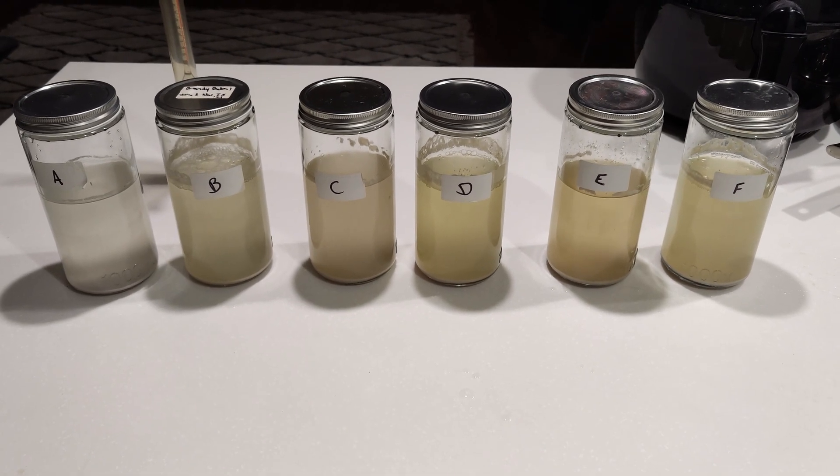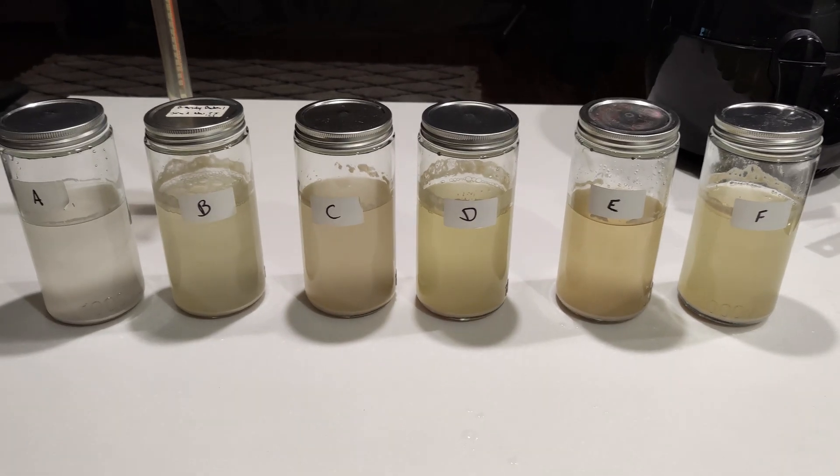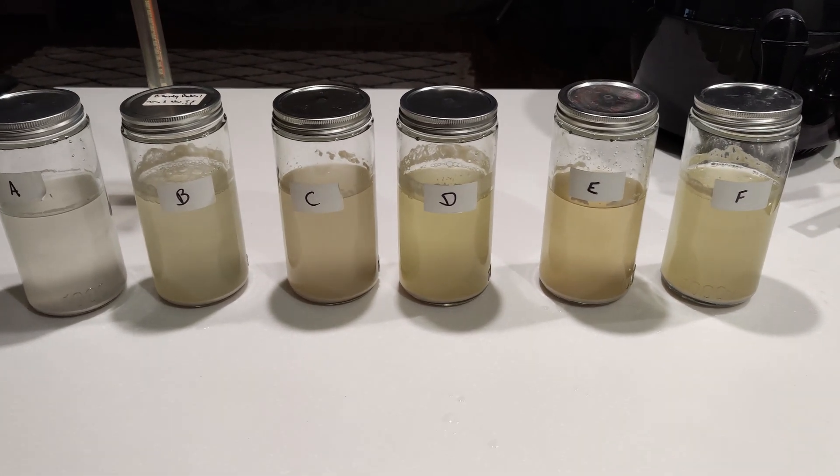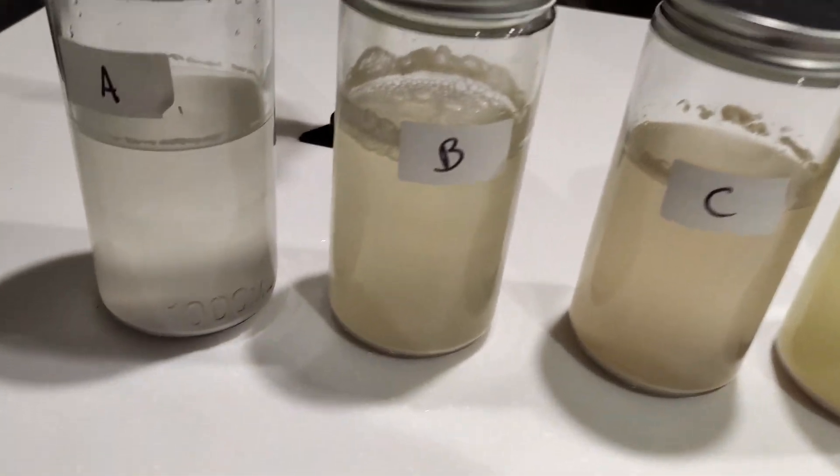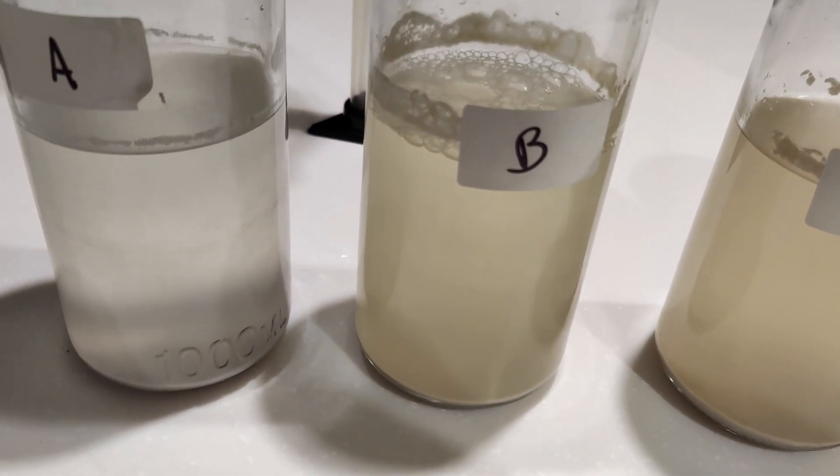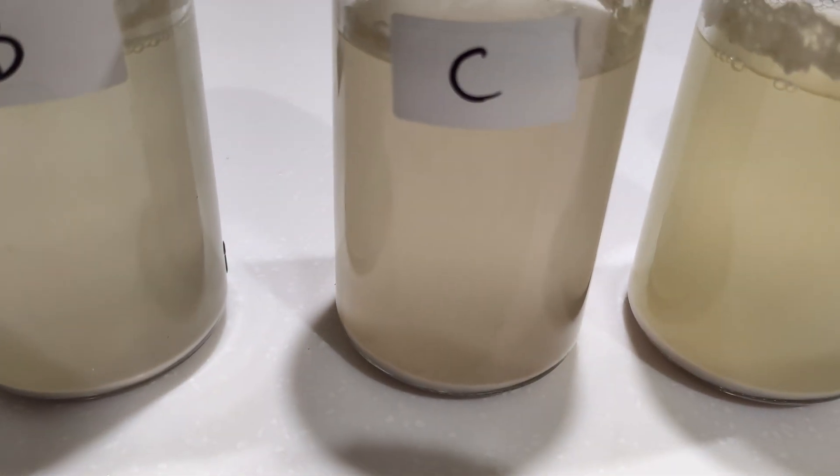Okie dokie artichokey. It's been a week now since we put these on and they all have some very different interesting colors but you can kind of pick which one is which. So from left to right we had the turbo yeast, then the baker's yeast and then the EC1118.